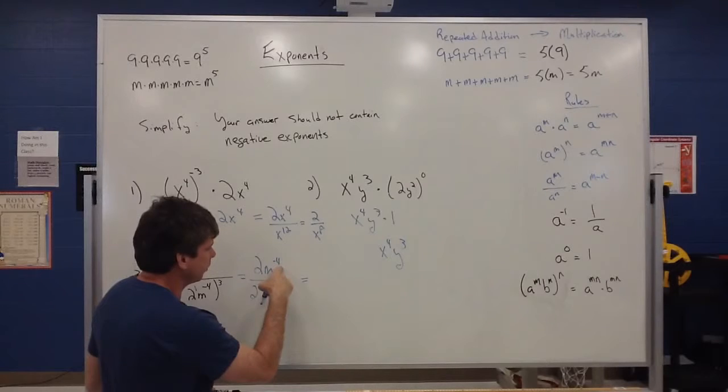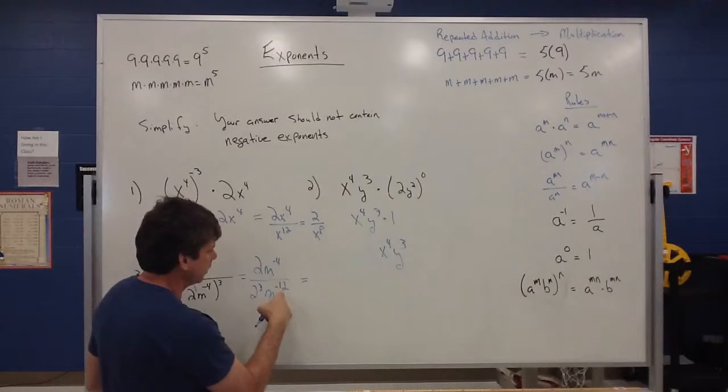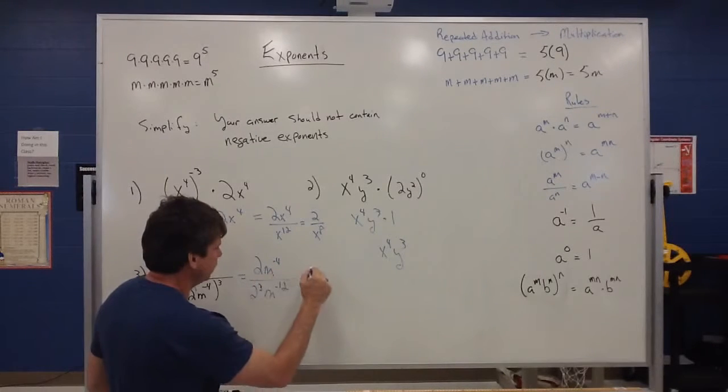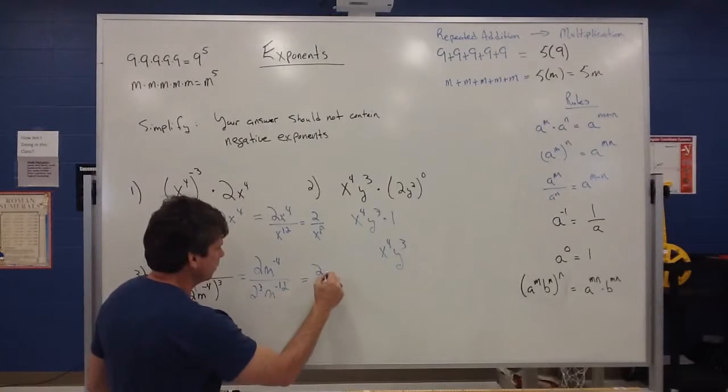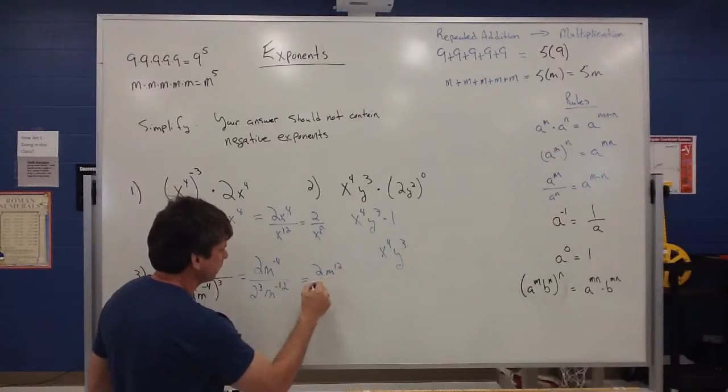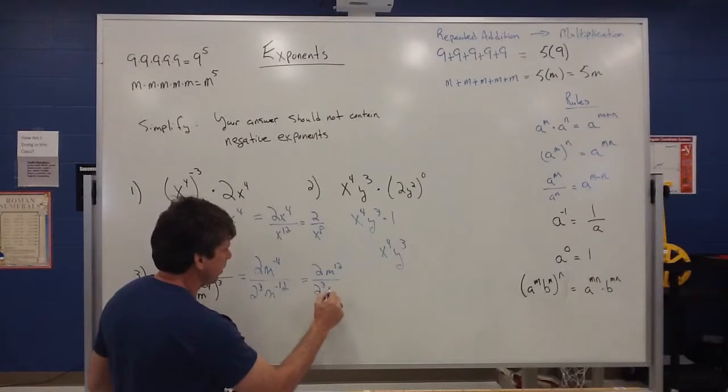But notice how these have negative exponents. That means this m to the negative 4 is going to go to the bottom, this m to the negative 12 is going to go to the top. So this 2 stays put, this m to the 12 goes to the numerator, this 2 to the third is going to stay put and I have that m to the negative 4 is going to go to the bottom as m to the fourth.